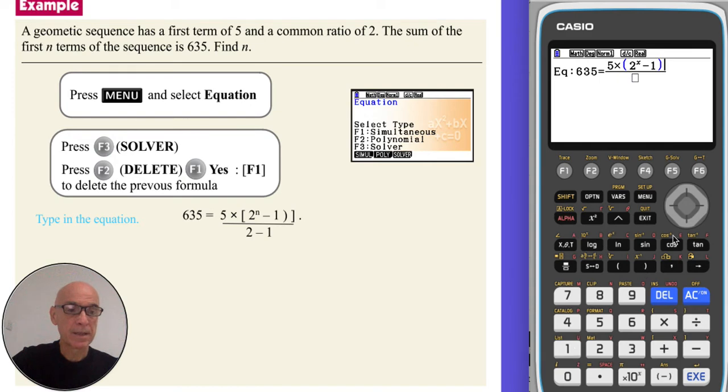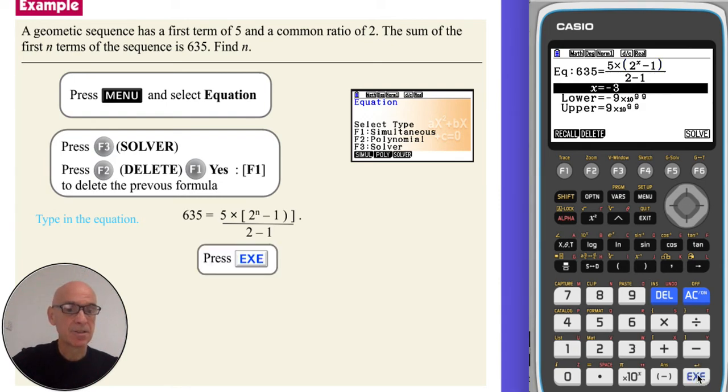Close the bracket. And the down cursor. And on the bottom, we can put it in a bracket. 2, take away 1. Close the bracket. And then press execute to enter the equation.